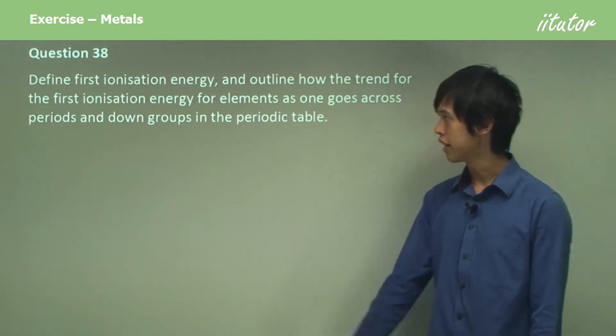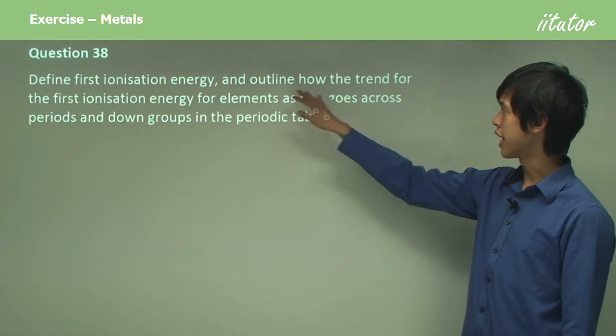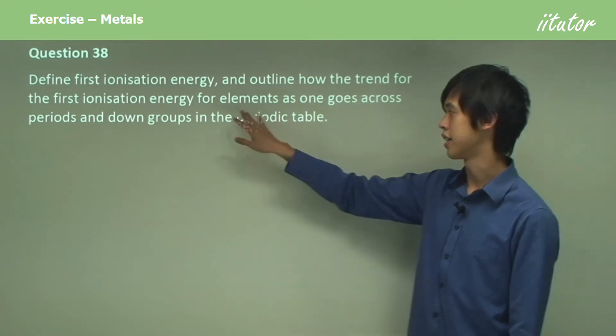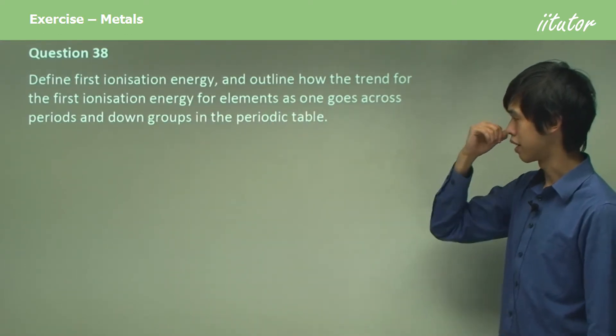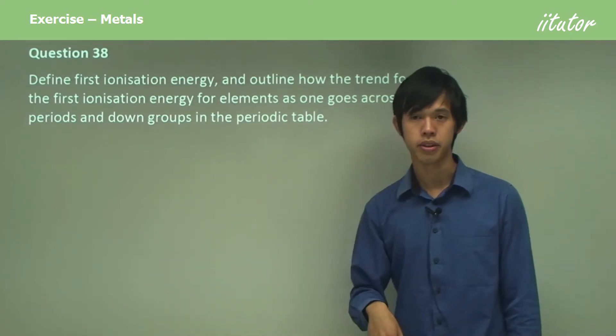So question 38. Define first ionization energy and outline how the trend for the first ionization energy for elements goes across periods and down groups in the periodic table.